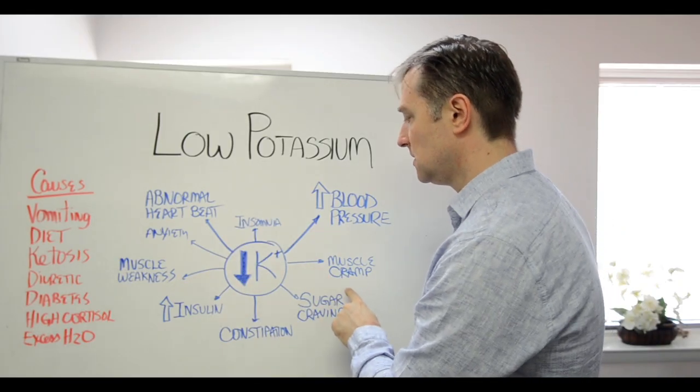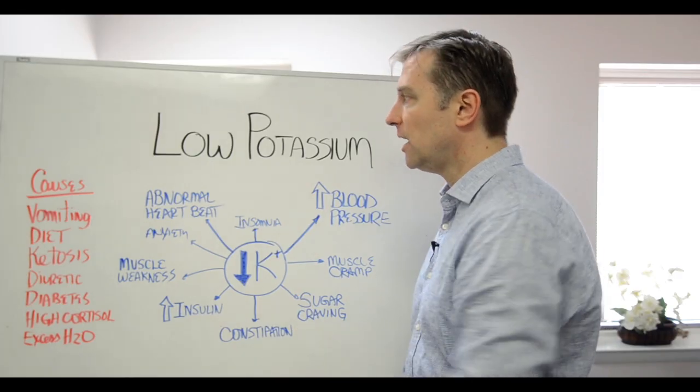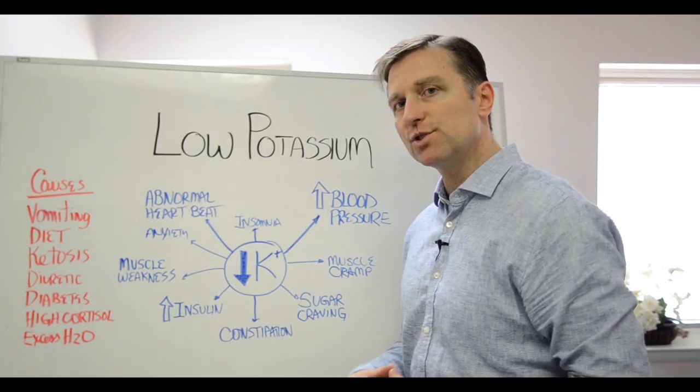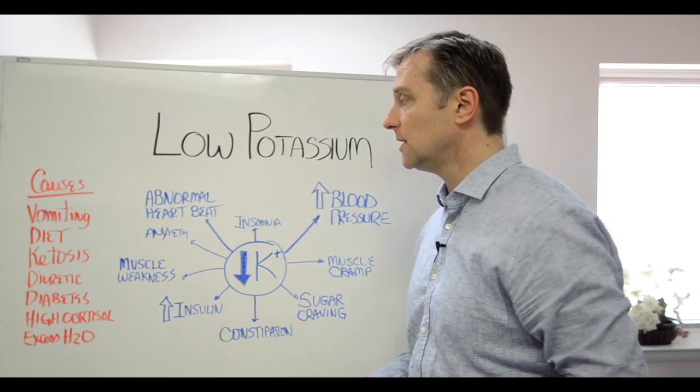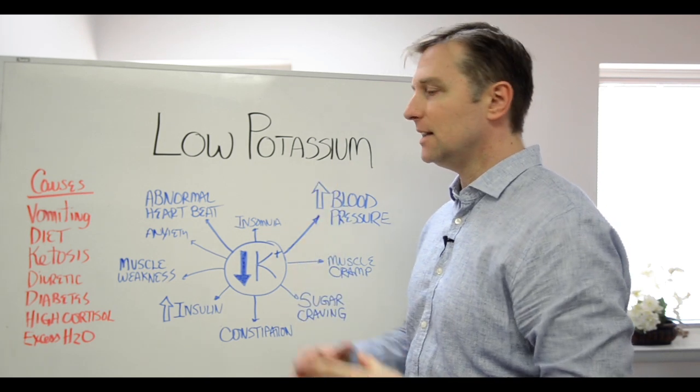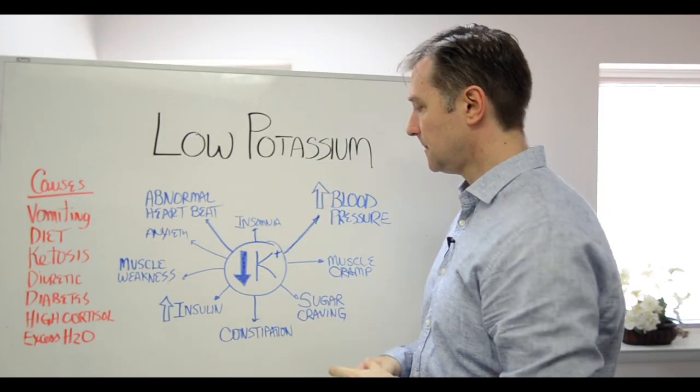Muscle cramps, because potassium is an electrolyte. Sugar cravings. Why? Because potassium helps you store sugar and it will actually help you get rid of sugar cravings because the storage of glucose needs potassium.